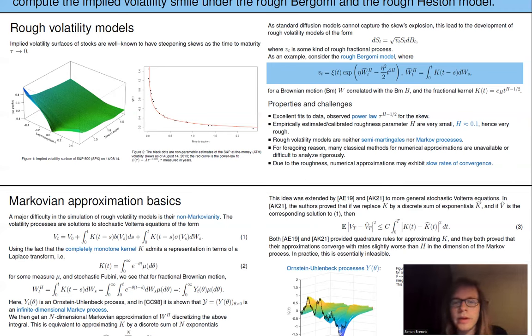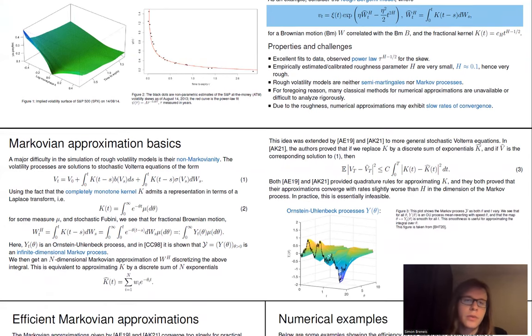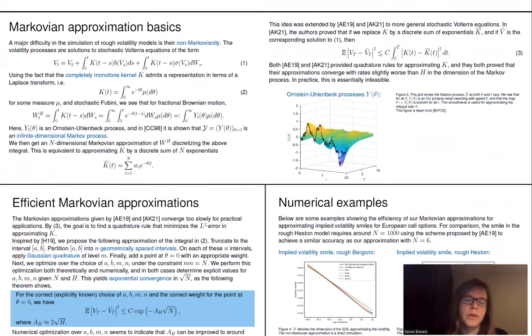And also, if the Hurst parameter is that small, it's really, really rough. So all this together makes both the theoretical analysis of these models and the numerical simulation of such models incredibly difficult. So if you want to simulate a rough volatility model directly, usually you have very, very slow rates of convergence.